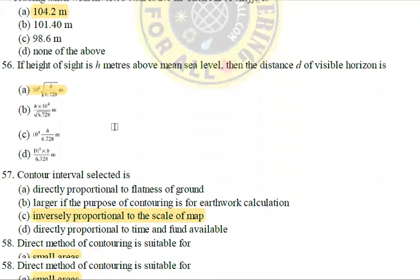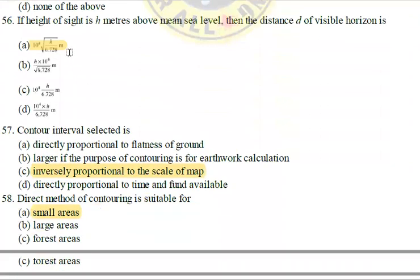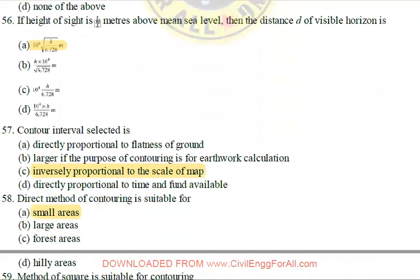Next: Height of sight above mean sea level — the distance formula for visible horizontal distance D is given as the square root of height multiplied by 6.728 meters.